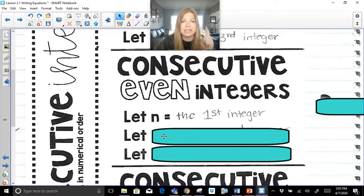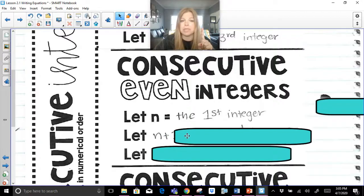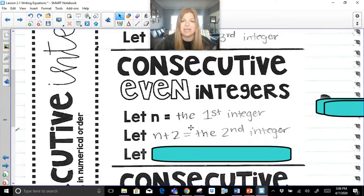So n is the first integer. n plus 2 would be the second integer. So think about it. The first number was 10. The way you'd get to the next one is 10 plus 2. How do you think you get to the third integer?